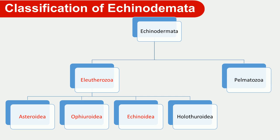The other group is Pelmatozoa. 'Pelmato' means stalk and 'zoa' means animal — those Echinoderm animals that are attached to any substratum are called Pelmatozoa. Most groups of Pelmatozoa are extinct. The oral surface is attached to the substratum via a stalk and directed upward. Pelmatozoa has only one class, known as Crinoidia.